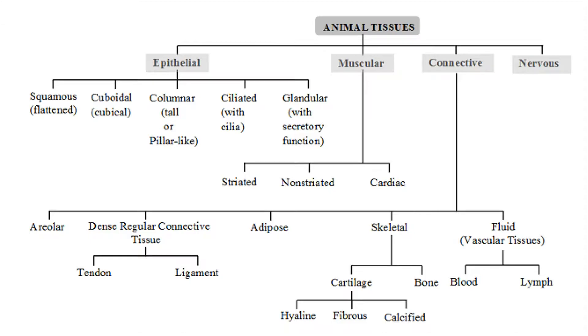This is the mind map of animal tissues. Animal tissues are broadly classified into epithelial tissue, muscular tissue, connective tissue, and nervous tissue.